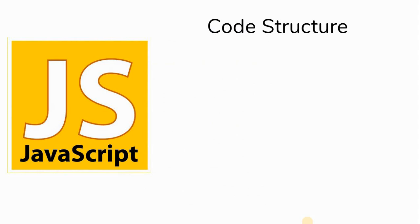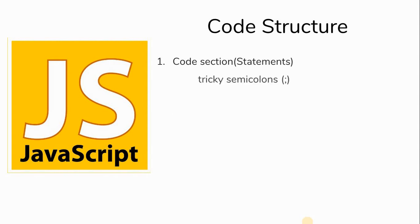The entire JavaScript code is divided into two parts. The first part is called the code section, where we usually write statements. A statement is a set of instructions where we need to perform some actions — we write code in the form of statements, which are a set of instructions we want to execute. In this code section there's a tricky part: tricky semicolons in JavaScript.